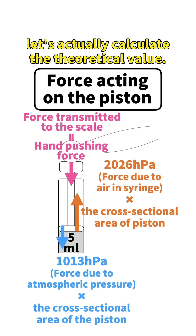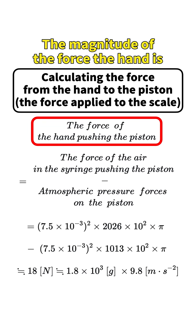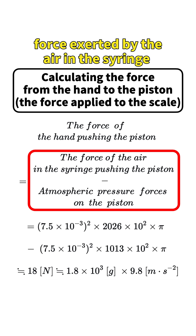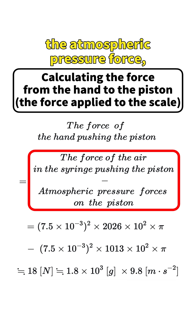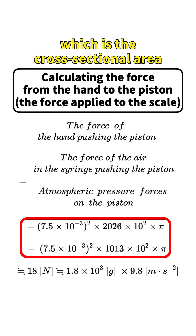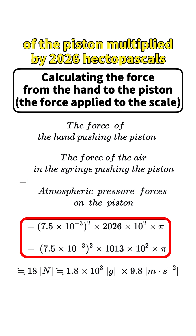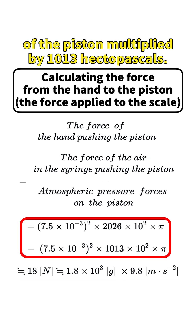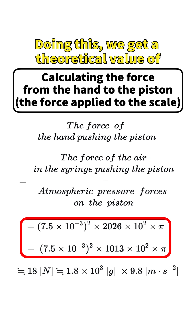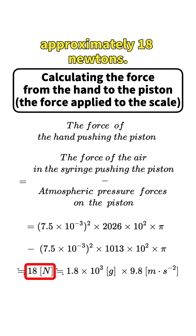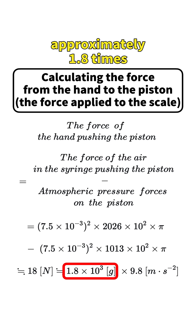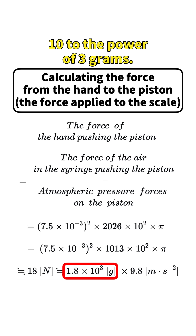Now, let's actually calculate the theoretical value. The magnitude of the force the hand is exerting on the piston is equal to the force exerted by the air in the syringe on the piston minus the atmospheric pressure force, which is the cross-sectional area of the piston multiplied by 2026 hectopascals minus the cross-sectional area of the piston multiplied by 1013 hectopascals. Doing this, we get a theoretical value of approximately 18 newtons. Dividing this value by the acceleration of gravity and converting it to grams gives us approximately 1.8 × 10³ grams.